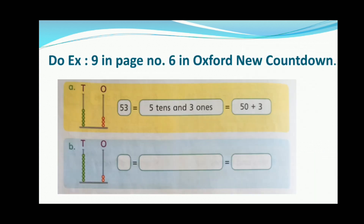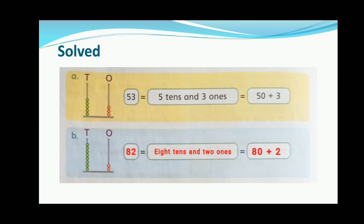Do Exercise 9 on page number 6: how many tens, how many ones? Look at the abacus, then fill in the empty boxes. Part A has been done for you. In part B, as you can see, there are 8 tens and 2 ones — write the number 82, then write 8 tens and 2 ones equals 80 plus 2. Now complete all the parts given in the book.